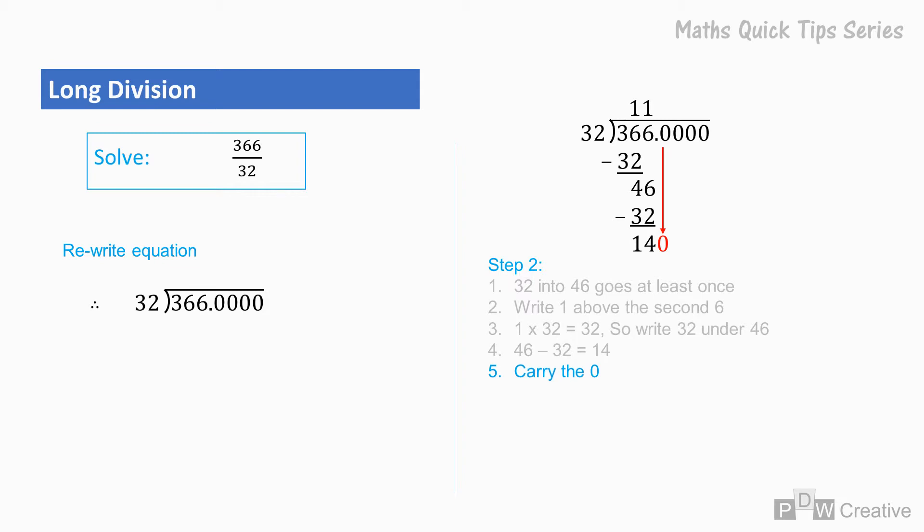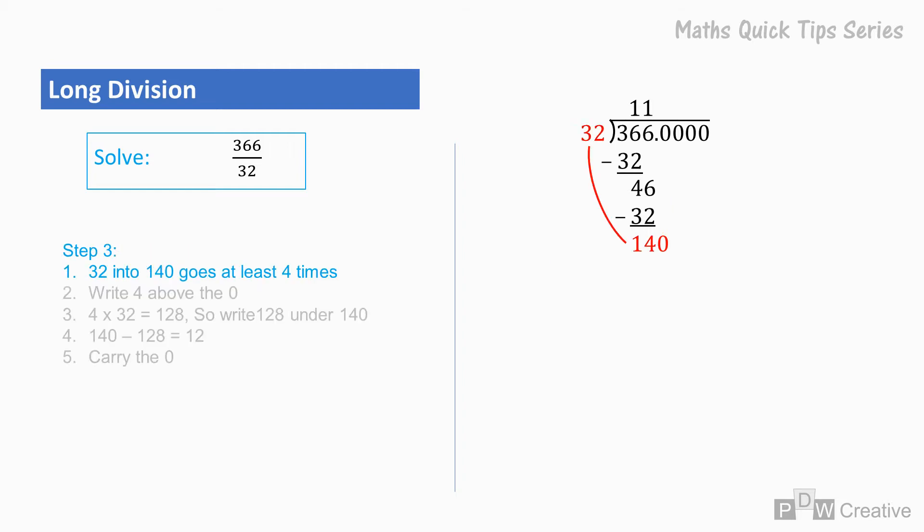OK, so now I've shown the first two steps, we can see the repetition involved. So I'm going to go through the remaining steps a little quicker. Step 3. 32 into 140 goes at least 4 times, so we can write 4 above the first decimal place.